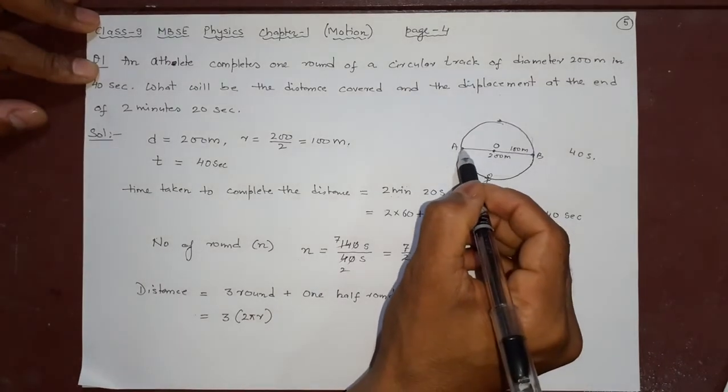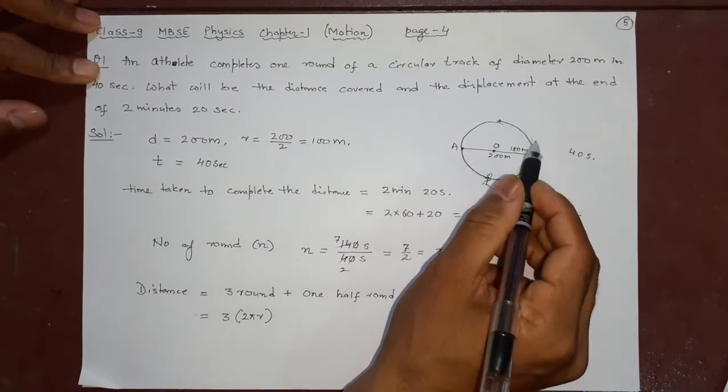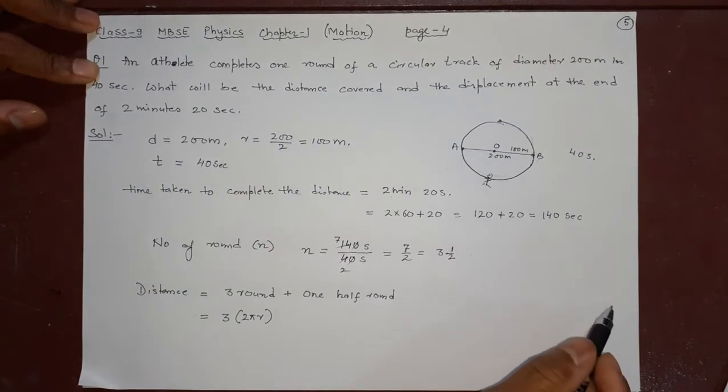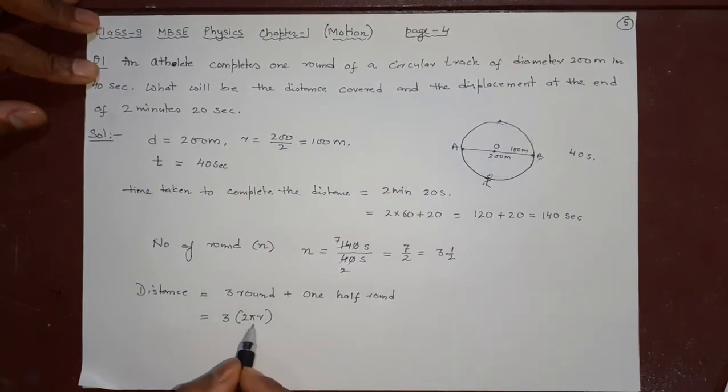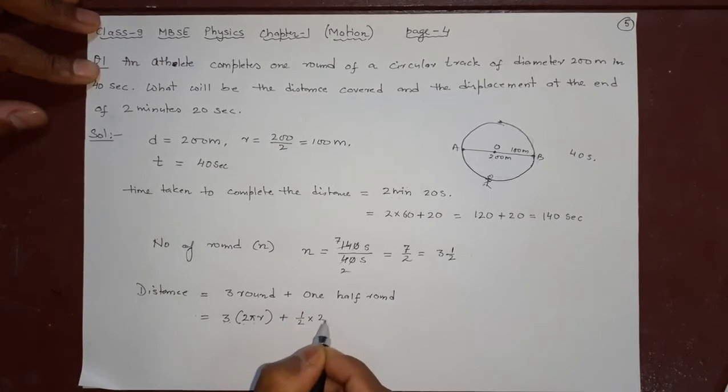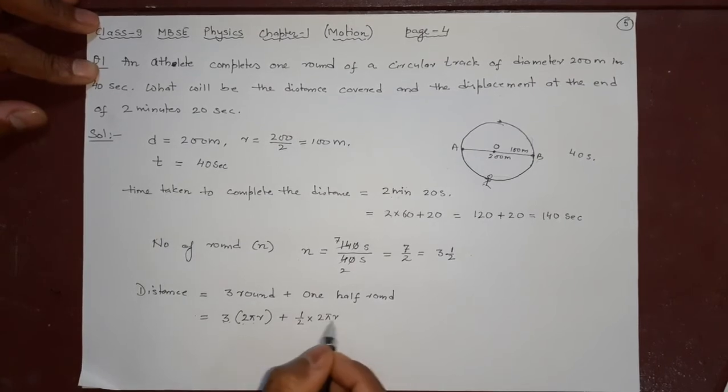3 times means 3 circumferences. And also half round means half into 2 pi r. One round is 2 pi r, so half round is half of 2 pi r.